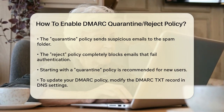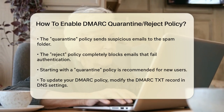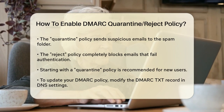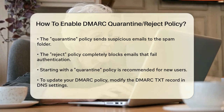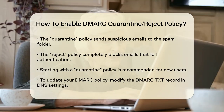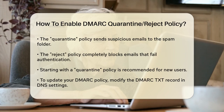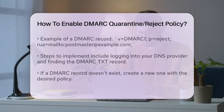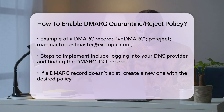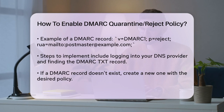Update your DMARC record. To set up or update your DMARC policy, you need to modify your DMARC TXT record in your DNS settings. Here's an example of what a simple DMARC record looks like: v=DMARC1; p=reject; rua=mailto:postmaster@example.com. In this example, v=DMARC1 indicates the DMARC version, p=reject sets the policy to reject non-compliant emails, and rua=mailto:postmaster@example.com specifies where to send the DMARC reports.